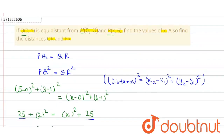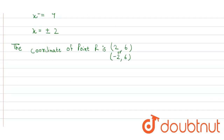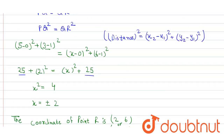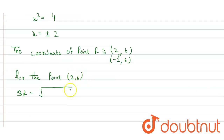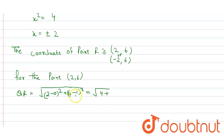Now we find the two distances QR and PR. For the coordinate (2, 6), QR = √[(2 - 0)² + (6 - 1)²] = √[4 + 25] = √29.